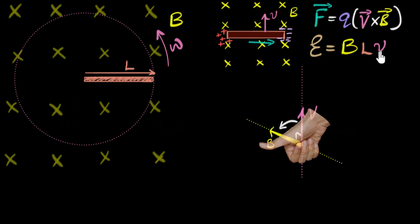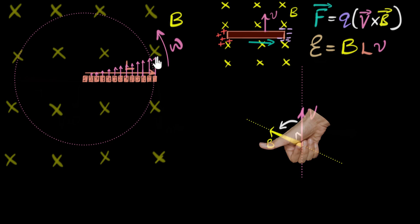What do we substitute for the velocity? The way to think about this is instead of figuring out the EMF for the entire rod at once, we divide the rod into tiny pieces. Because each piece has its own velocity, each piece will generate its own EMF. The potential difference will be very low near the center and keeps increasing toward the tip. What we want is the total potential difference from one end to the other, which means we have to add up all these potential differences — in other words, we need to set up an integral.